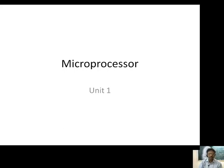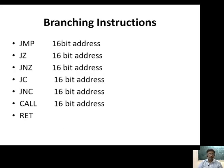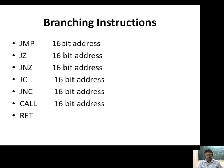We will be discussing the remaining part of unit number 1 of the microprocessor, in which we have to discuss today about the branching instructions. We have many branching instructions used in 8085. There are two kinds: one is conditional branching instruction and another is unconditional branching instruction.